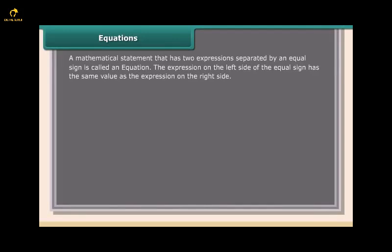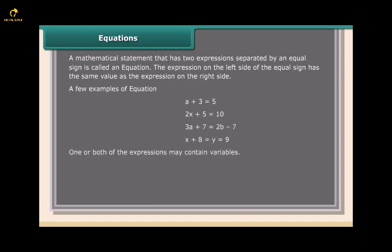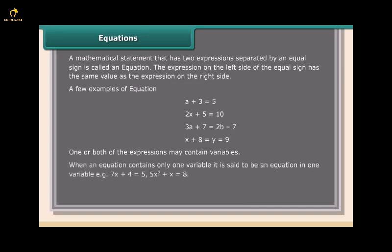A mathematical statement that has two expressions separated by an equal sign is called an equation. The expression on the left side of the equal sign has the same value as the expression on the right side. A few examples of equations: one or both of the expressions may contain variables. When an equation contains only one variable, it is said to be an equation in one variable.